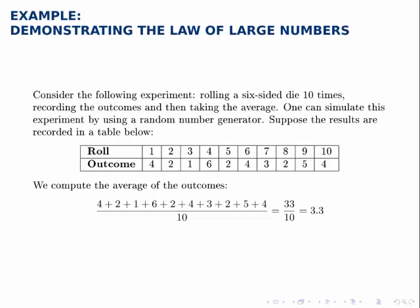Here's a simple example to demonstrate the law of large numbers. Again, the law of large numbers states that if we do an experiment over and over and over again, the results will line up with the probabilities that we expect before we run the experiment.